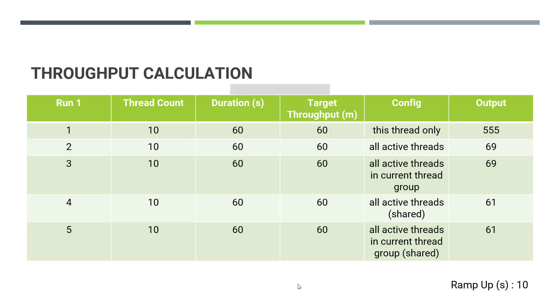I have conducted a simple experiment to explain the concept of throughput calculation. In the experiment, I have done five different executions based on five different settings in the throughput timer.